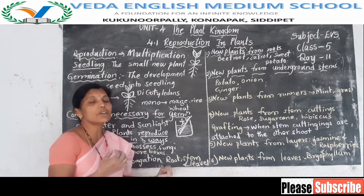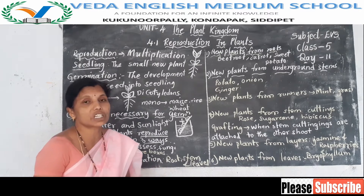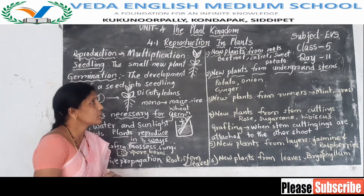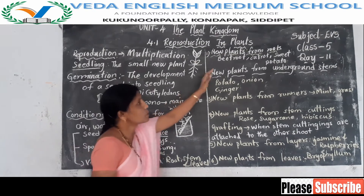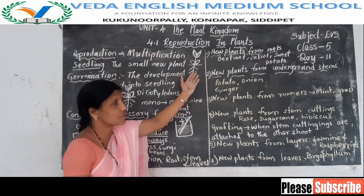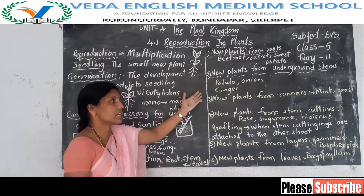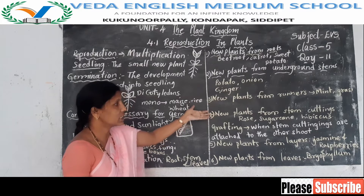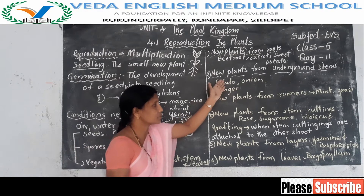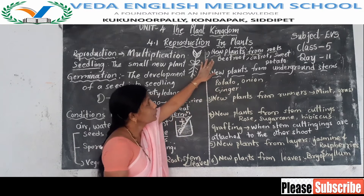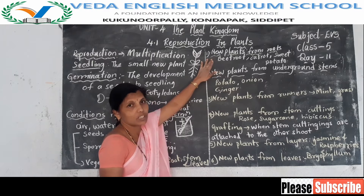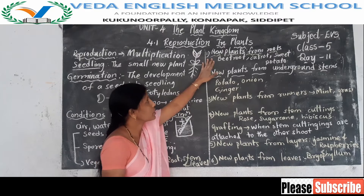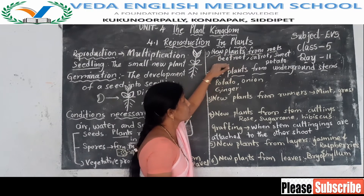Some plants reproduce through roots, stem, and leaves. This process is called vegetative reproduction or vegetative propagation. Now let's see which plants reproduce through roots — new plants from roots.